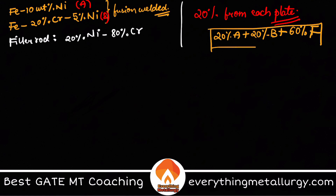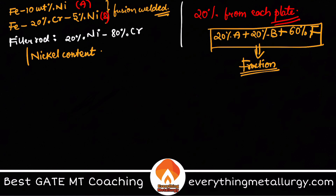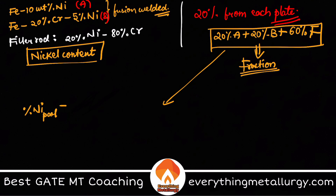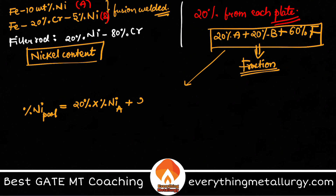So the percentage of the constituents in the weld pool is: 20% from A, 20% from B, and 60% from filler. We need to find the nickel content. Using the composition fraction formula, the percentage of nickel in the weld pool equals: 20% × (% Ni in A) + 20% × (% Ni in B) + 60% × (% Ni in filler).